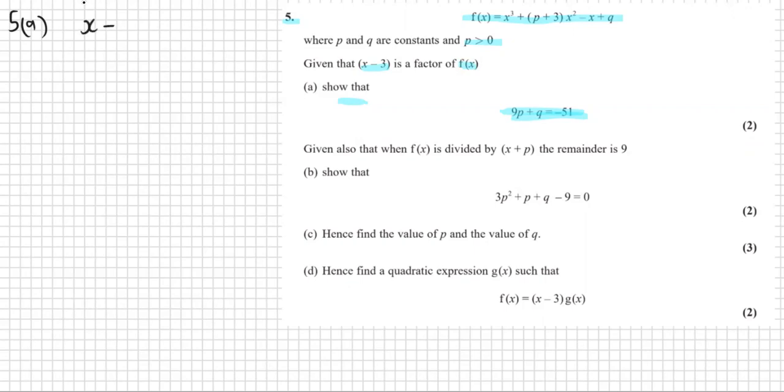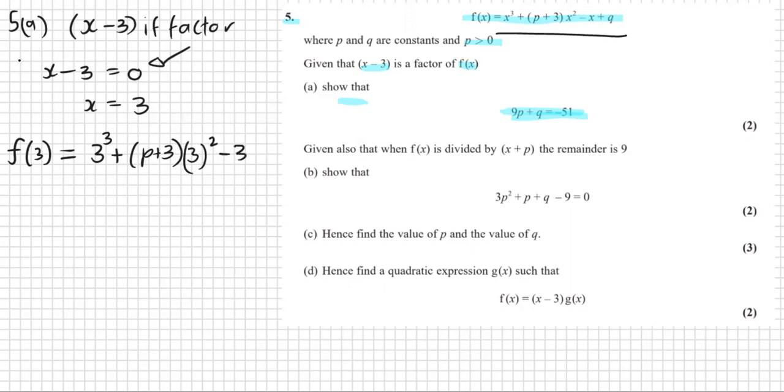Anytime I see X minus 3 is a factor, then I know because if X minus 3 is a factor, then X minus 3 must be equal to zero and X must be equal to three. If it's a factor, that means that the Y is zero. So we are essentially looking for F of 3. Where the X is 3, F of 3 if we're using our F of X formula.